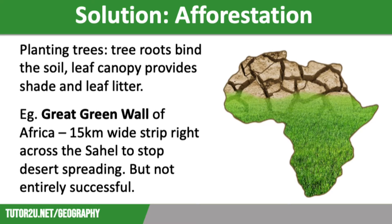The first strategy we're going to look at is afforestation. Afforestation is simply planting trees, and it is a good strategy to reduce the risk of desertification as tree roots bind the soil together and the leaves provide shade to stop the ground drying out, as well as providing leaf litter for nutrient cycling.